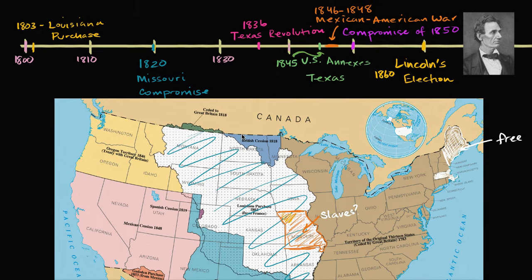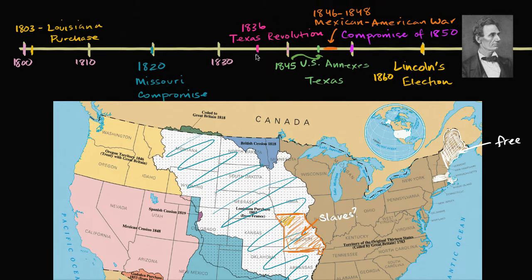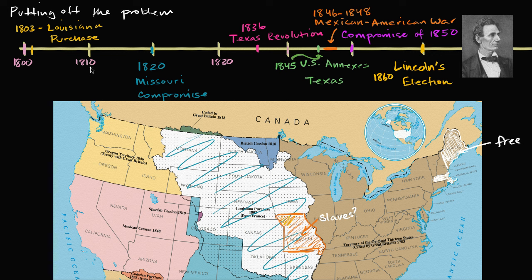That problem only continued because we only added more territory. Most of the history of the 1800s when it comes to slavery is a history of putting off the problem. Henry Clay becomes a very famous legislator because he's good at compromising — he's called the Great Compromiser. So instead of trying to actually solve the issue of slavery, which many people think of as an unsolvable problem, they're just saying, how can we put off the conflict over this a little bit longer?